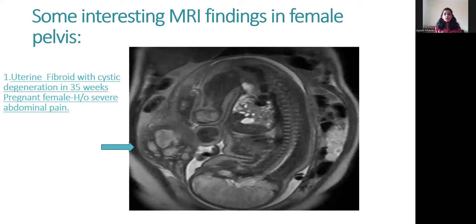Some interesting cases of MRI findings in female pelvis. First case: uterine fibroid with cystic degeneration in a 35-weeks pregnant female with history of severe abdominal pain. On MRI, this is the fetus and this is the anterior wall intramural fibroid with cystic degeneration.